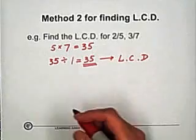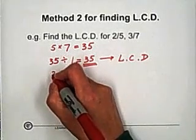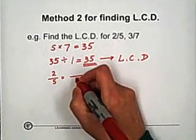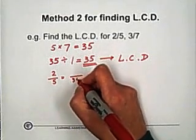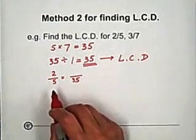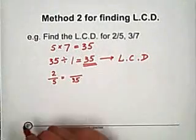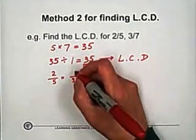And also you can convert 2 fifths with denominator 35. From 5 to 35 you multiply 7. So you multiply 7 to the top, to the numerator 2. So it's 14.